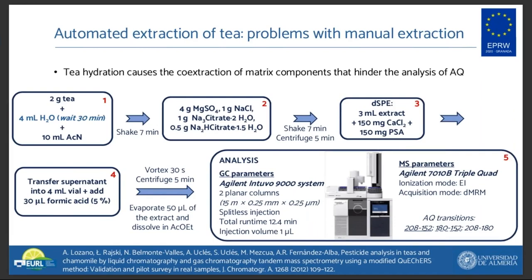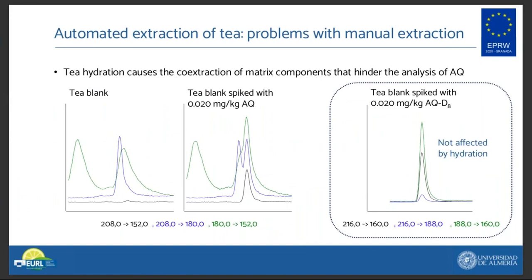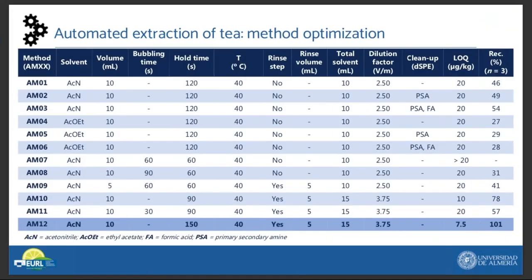The specific method for the extraction of pesticides from tea was developed by some colleagues of mine within our laboratory, Dr. Lozano and Dr. Reischke. This method includes a hydration step prior to extraction and a dispersive solid phase cleanup step using calcium chloride instead of magnesium sulfate. The extracts were analyzed by liquid chromatography and gas chromatography coupled to triple quadrupole mass spectrometry. When we applied this method for the extraction and analysis of anthraquinone in tea, at the MRL of 20 ppb, anthraquinone was barely distinguishable from co-extracted matrix interferences in two out of three of its most intense mass transitions.